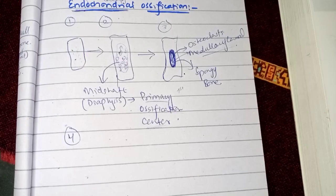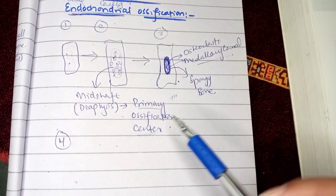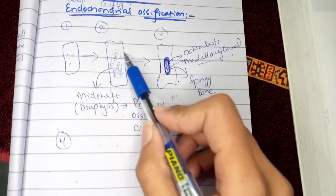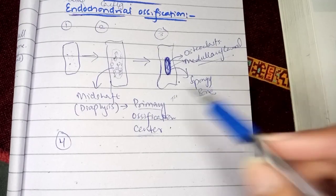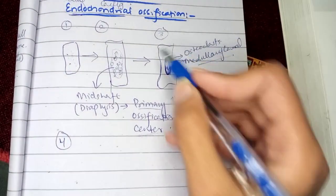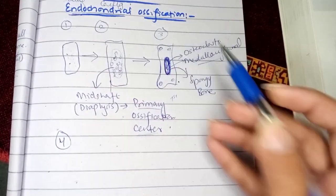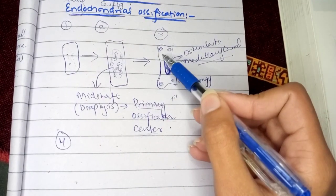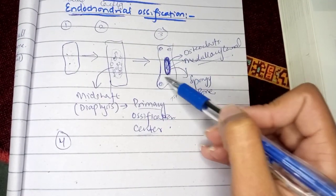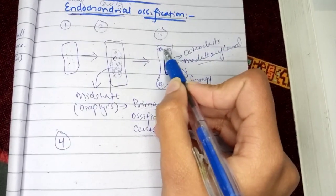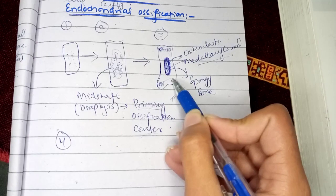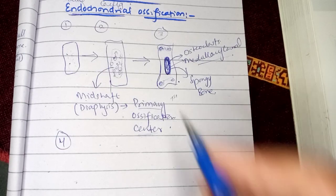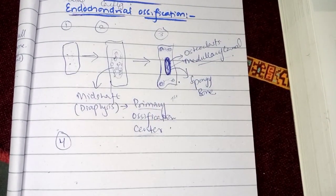In the fourth step, with each successive stage, the cartilage is being replaced by the bone. The areas on either side are also invaded by osteoblasts forming bone there as well, so the remaining cartilage is soon replaced by compact bone.